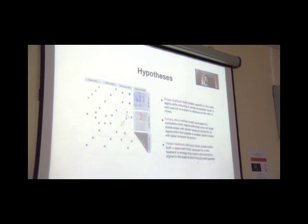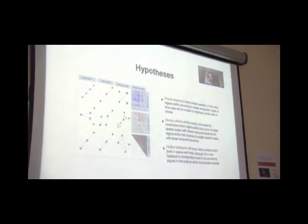So I will remind you very quickly the hypotheses we have. For shared drivers, we were thinking that context was relevant, so things like land use and ecosystem type. For domino effects, we were expecting a scale separation. For hidden feedbacks, we were expecting a scale matching, so the regime shifts would operate at the same tempo.